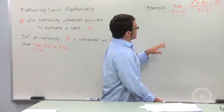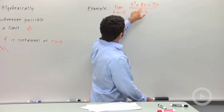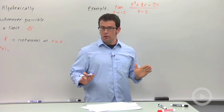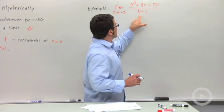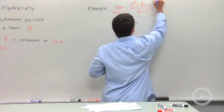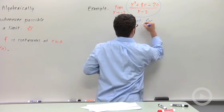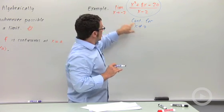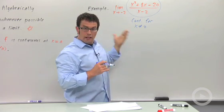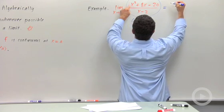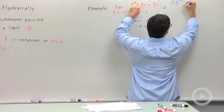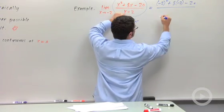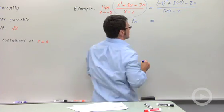Here's an example. This looks like a terrible limit: the limit as x approaches negative 2 of x squared plus 8x minus 20 over x minus 2. Now this is a rational function, so it's going to be continuous everywhere it's defined. It's only undefined for x equals positive 2, so this is continuous for x not equal to 2. We're letting x approach negative 2, which is well clear of positive 2. So I can evaluate this limit by plugging in: negative 2 squared plus 8 times negative 2 minus 20, all over negative 2 minus 2. I just have to do this arithmetic.